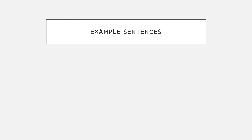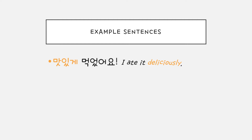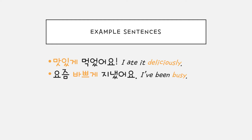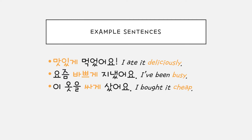Let's look at some example sentences. 맛있게 먹었어요. 맛있게 is describing the manner of 먹었어요. 요즘 바쁘게 지냈어요. 바쁘게 describes the manner. 이 옷을 싸게 샀어요. 싸게 is describing the action of 샀어요.